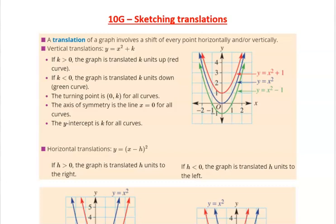A translation of a graph involves a shift of every point horizontally left and right or vertically. So in this case, if we add a k after the x squared, then that means that we're going to be moving up or down.